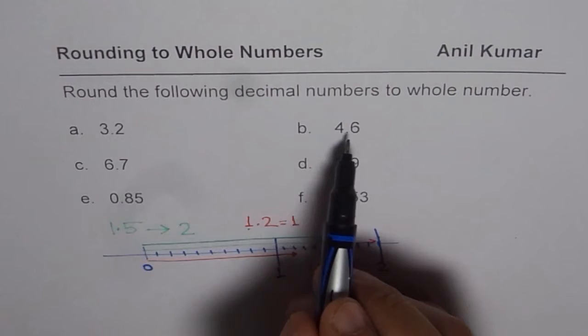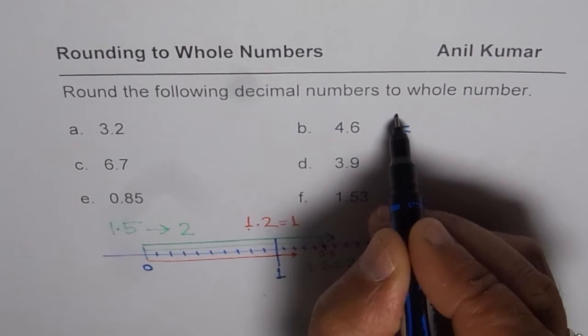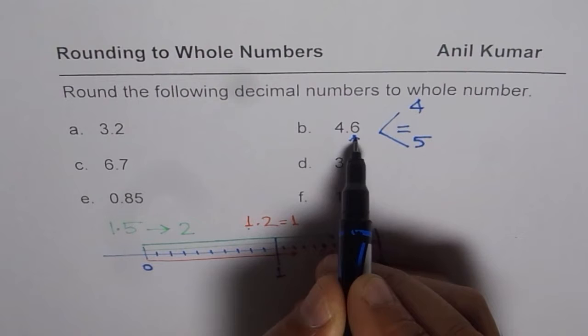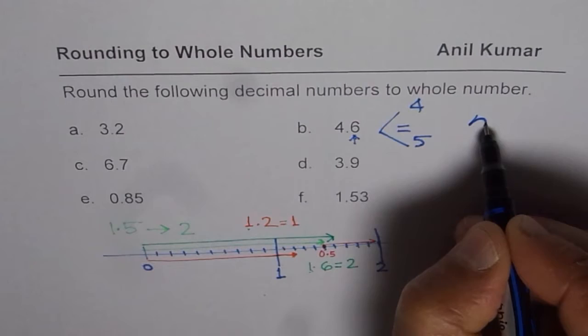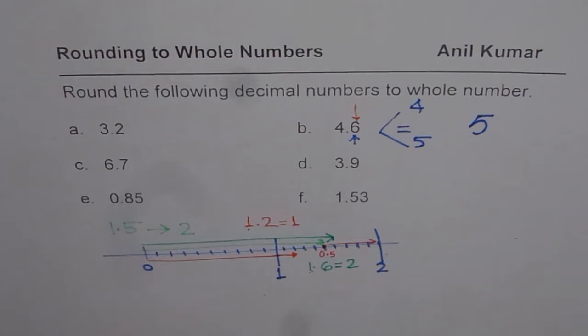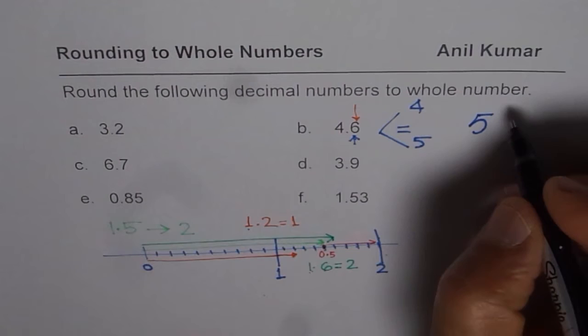Let us begin with part B, which is 4.6. Rounding 4.6 to whole number means it could be, you could think like this, it could be 4 or it could be 5. These 2 whole numbers are close to 4.6. You can see, since this number is 5 or more, you round it to higher and therefore, we round this to number 5.